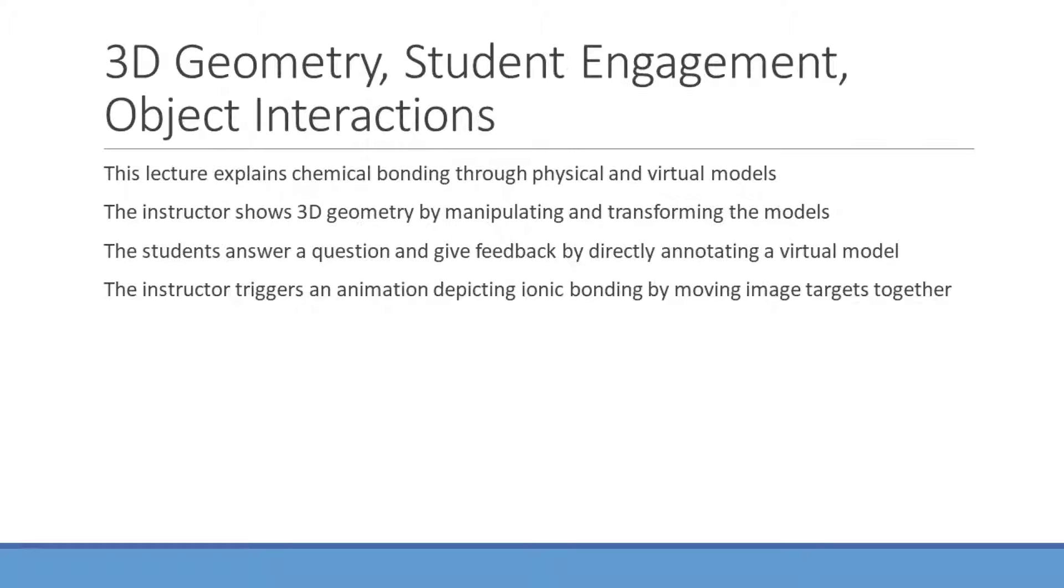Our next example explores 3D geometry, student engagement, and object interactions. This lecture explains chemical bonding using physical and virtual models in the AR teaching space. The instructor shows 3D geometry by manipulating and transforming the presented models. The students answer a question and give feedback by directly annotating a virtual model. Finally, the instructor triggers an animation by moving two image targets close together, which helps explain ionic bonds.